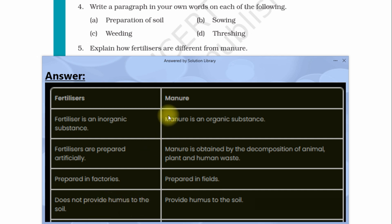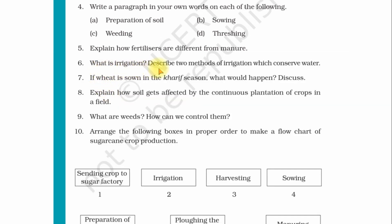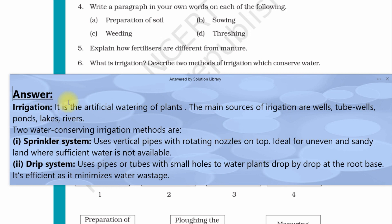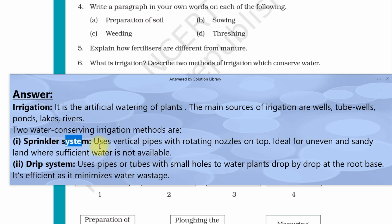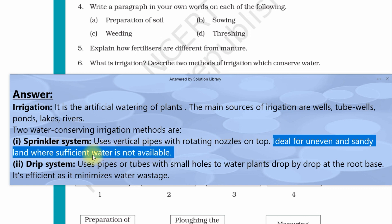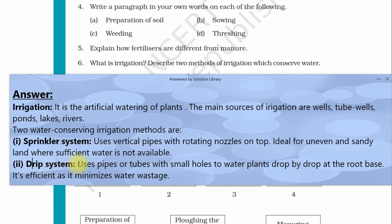Question number six: What is irrigation? Describe two methods of irrigation which conserve water. Answer: Irrigation is artificial watering of plants. The main sources of irrigation are wells, tube wells, ponds, lakes, and rivers. Water conserving irrigation methods are sprinkler system and drip system. Sprinkler system uses vertical pipes with rotating nozzles on top, ideal for uneven and sandy lands where sufficient water is not available. Drip system uses pipes or tubes with small holes to water plants drop by drop at roots. It is efficient as it minimizes water wastage.